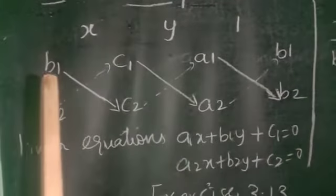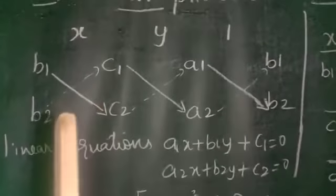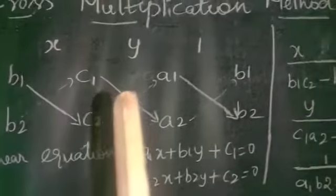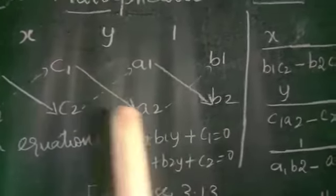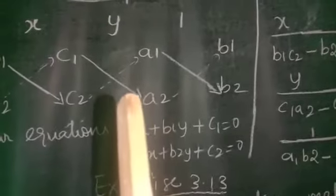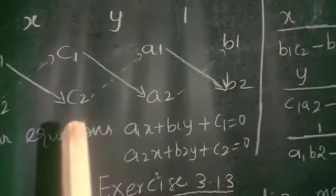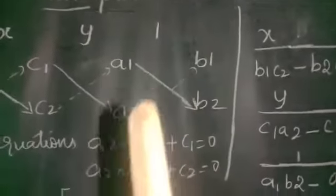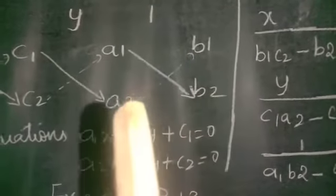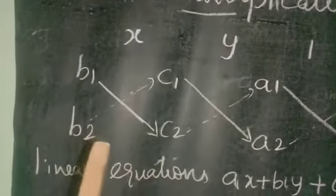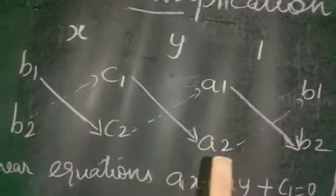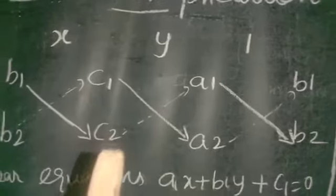Listen students. In the cross method we use: x divided by B1 into C2 minus B2 into C1, is equal to y divided by C1 into A2 minus C2 into A1. This diagonal only we want to multiply — C1 into A2 minus C2 into A1, is equal to 1 divided by A1 into B2 minus A2 into B1.